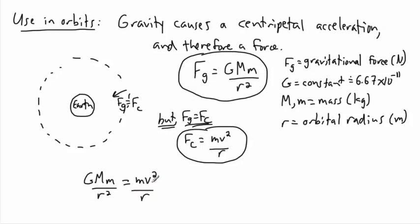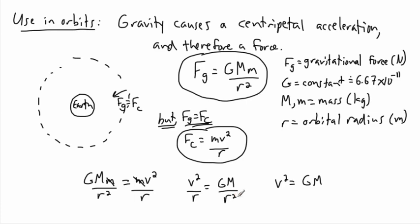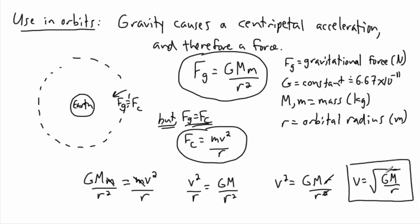That's kind of nice. What we can do then is see that the little m's cancel out — the mass of the small object cancels out. In other words, all that matters is the mass of the planet — in this case Earth. So now we can get V squared by itself. Rearranging: V squared over R equals GM over R squared. Moving R up, that gives V squared equals GM over R. So V equals the square root of GM over R. In other words, my orbital speed equals this constant times the mass of the planet divided by the orbital radius.